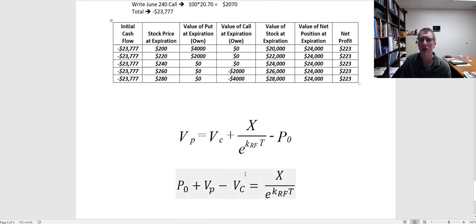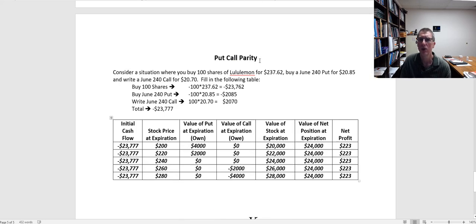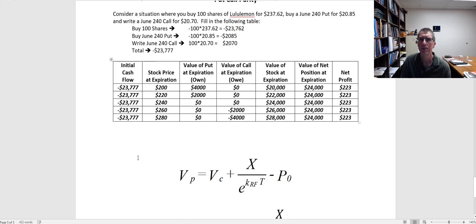And that's because we can use this combination of puts, calls, and the underlying stock to lock in a risk-free rate. If the value of the call was overpriced, we'd be able to earn more than a risk-free rate. If the value of the put was overpriced, we'd be able to earn more than a risk-free rate. So this kind of locks in the call and the put price, and that's why it's referred to as put-call parity and creates that relationship.